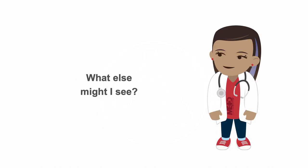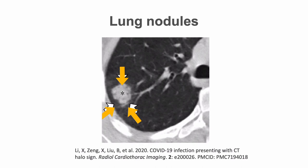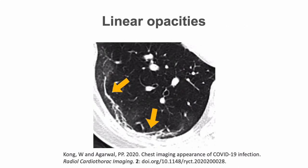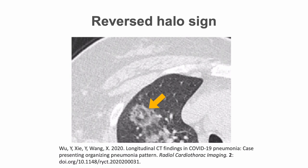Some other reported imaging findings include lung nodules and cystic changes, mostly representing pneumatoceles. Linear opacities may also be seen in some patients. These can be called subpleural lines, and they have been suggested to represent fibrotic changes when seen after resolution of other findings. However, given the short period of time since the emergence of this pandemic, it is early to determine whether they represent irreversible fibrosis or whether they might clear with more time after recovery.